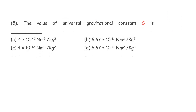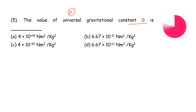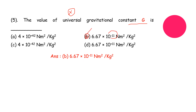The next question: what is the value of the universal gravitational constant G? The correct answer is option B: 6.67 × 10 to the power of minus 11 — not plus 11, minus 11 — newton meter squared divided by kilogram squared.